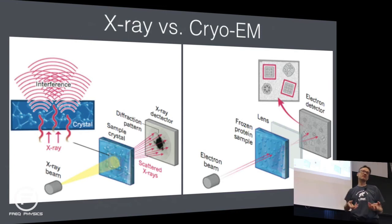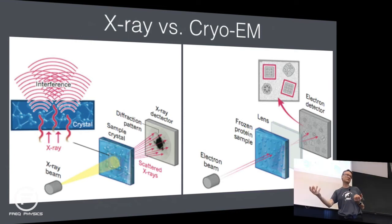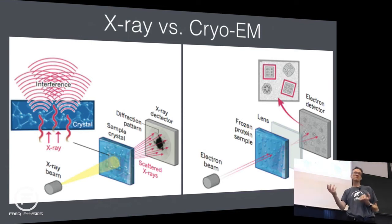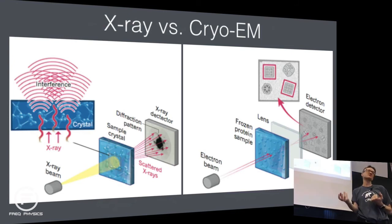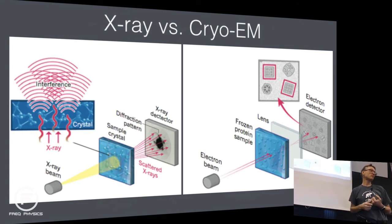It's an example of how modern experiments would not be possible without computers. You can imagine the amount of physics and math that has gone into these reconstruction algorithms. Modern biophysics is in many ways more computational and mathematical than it is experimental.